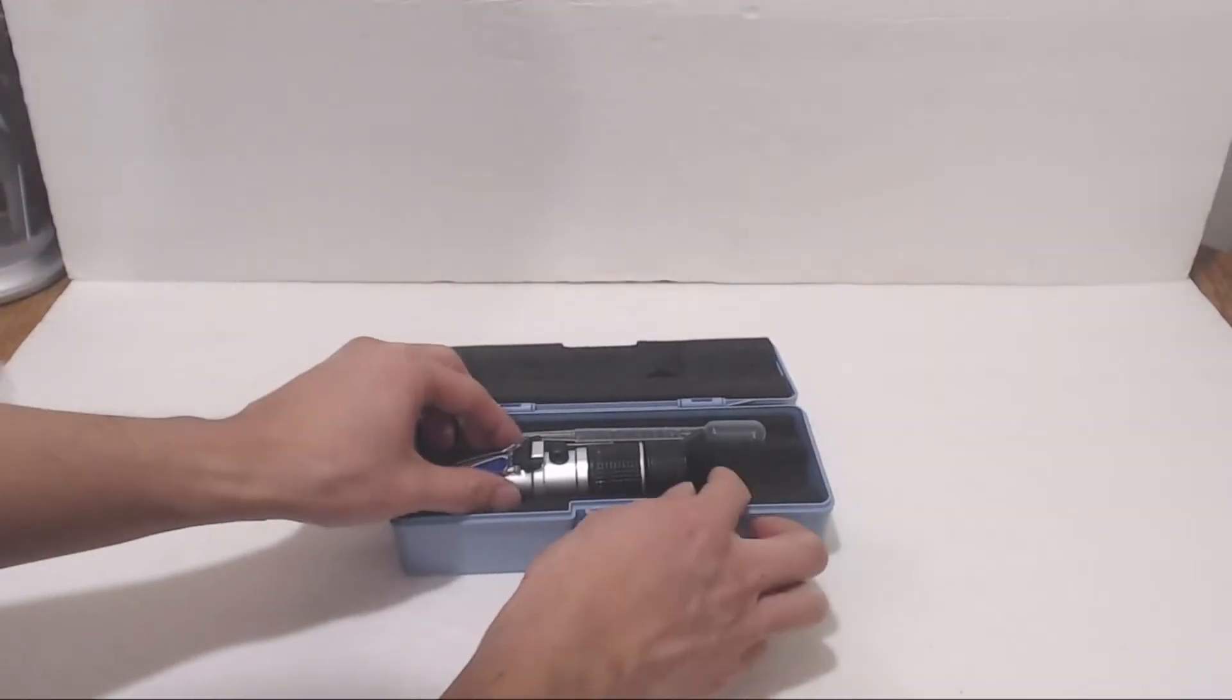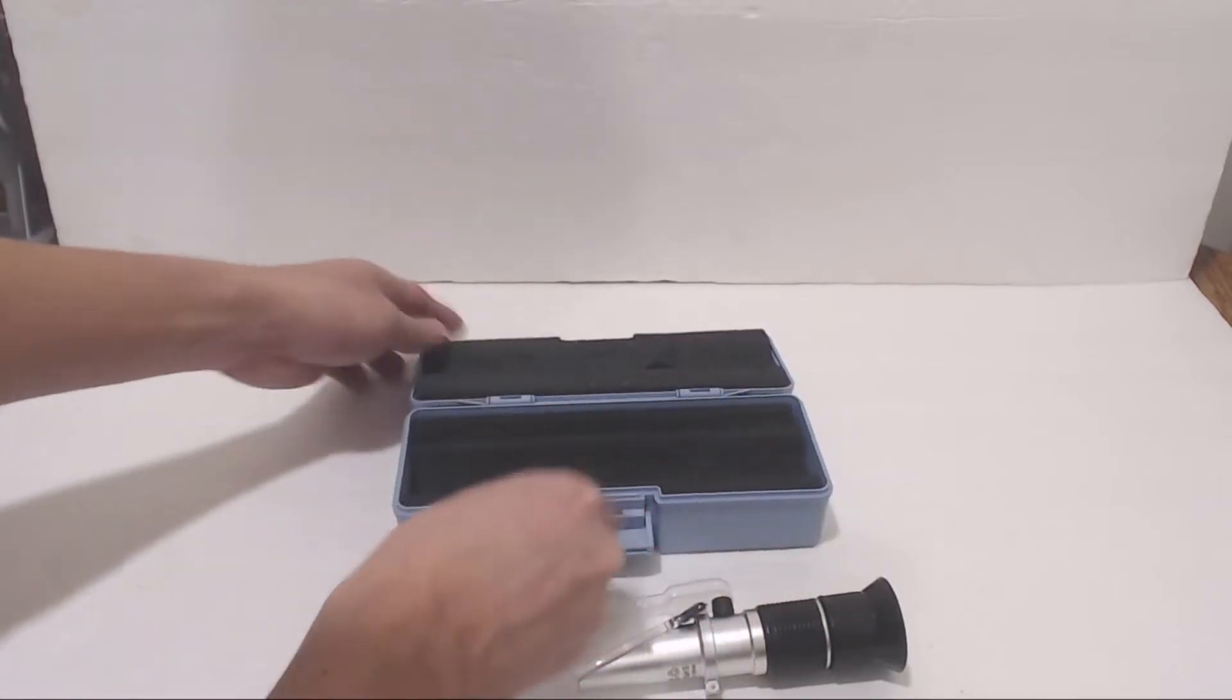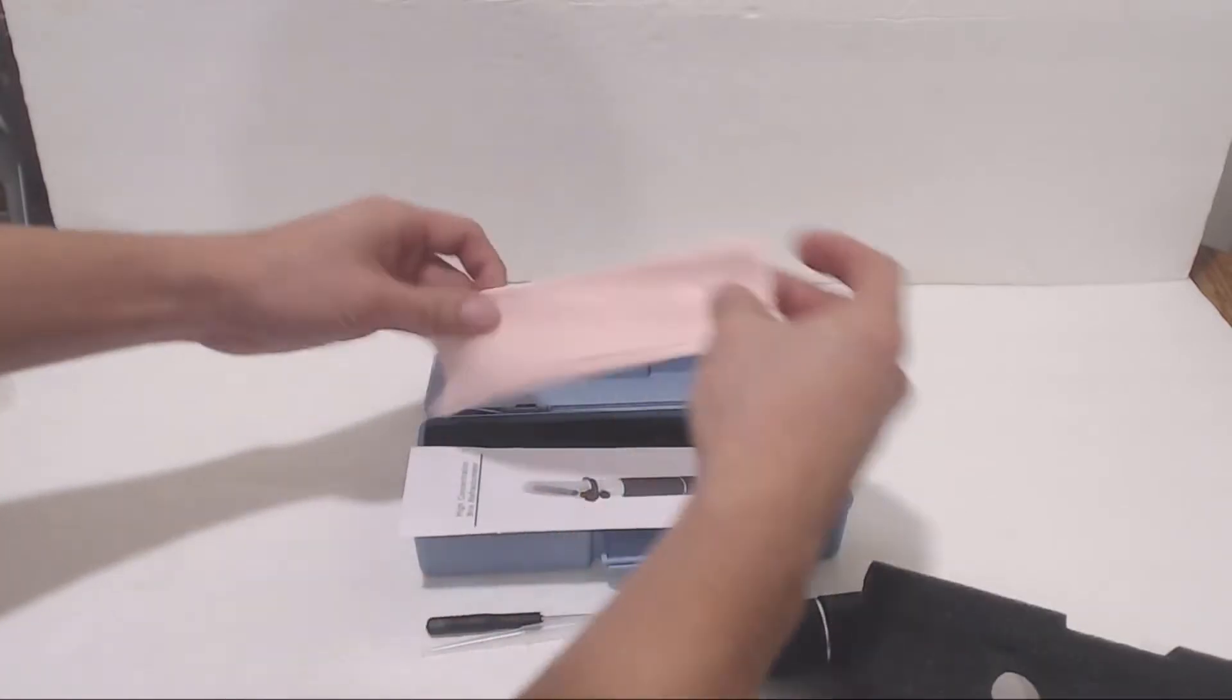You'll receive the refractometer in a hard plastic case, and it comes with a plastic pipette, a mini screwdriver, a set of instructions, and a cleaning cloth.